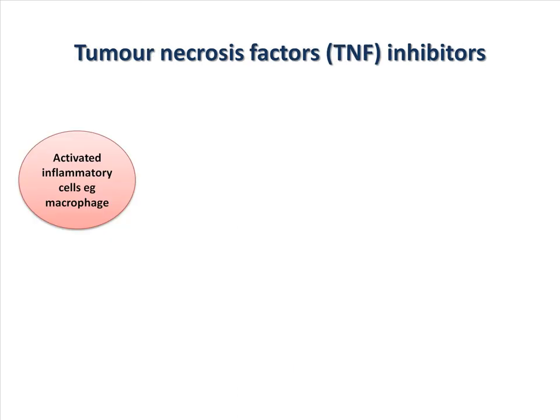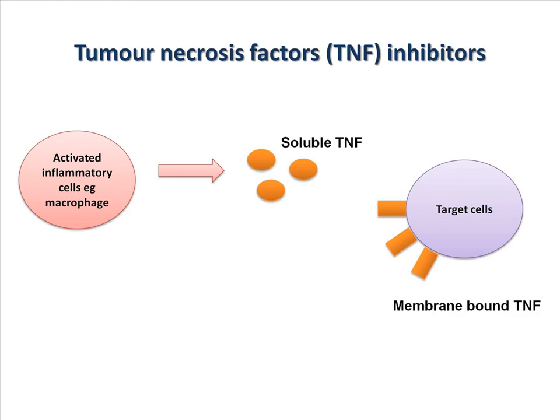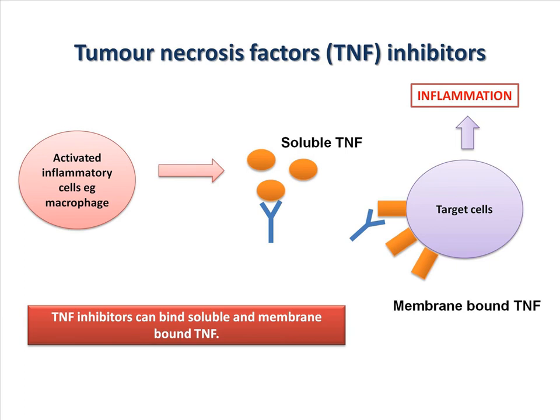In activated inflammatory cells, for example macrophages, soluble tumor necrosis factors are released. These bind to membrane-bound tumor necrosis factor receptors on target cells, resulting in inflammation. With the invention of tumor necrosis factor inhibitors, both soluble and membrane-bound TNF are inhibited, dramatically reducing inflammation. This new class of drug has changed the way we are able to treat refractory ankylosing spondylitis.